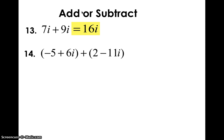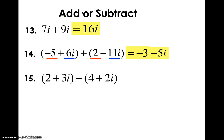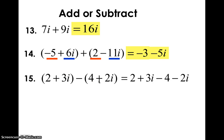For two complex numbers, we add the real parts together and the imaginary parts together. Negative 5 plus 2 is negative 3, and 6i plus negative 11i is negative 5i, so the result is negative 3 minus 5i. For subtraction, distribute the negative sign first: 2 plus 3i minus 4 minus 2i, then combine like terms. 2 minus 4 is negative 2, and 3i minus 2i is i, giving negative 2 plus i.